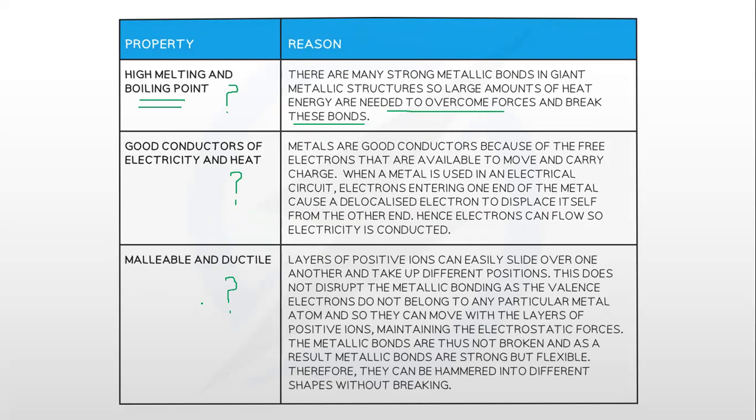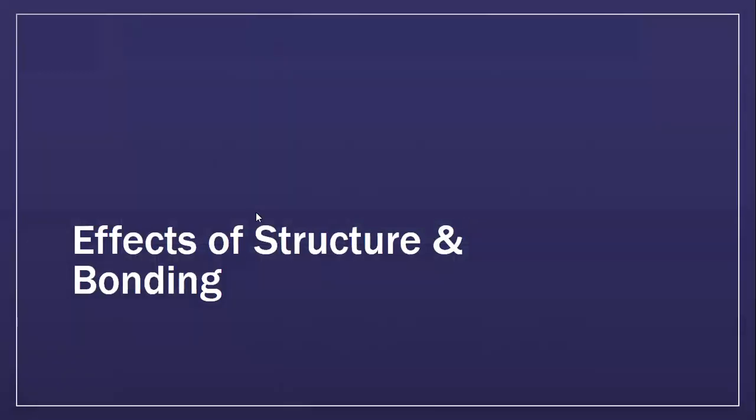Layers of positive ions can easily slide over one another and take up different positions. This does not disrupt the metallic bonding as the valence electrons do not belong to any particular metal atom, so they can move with the layers of positive ions, maintaining the electrostatic forces. The metallic bonds are thus not broken. As a result, metallic bonds are strong but flexible. Therefore, they can be hammered into different shapes without breaking.